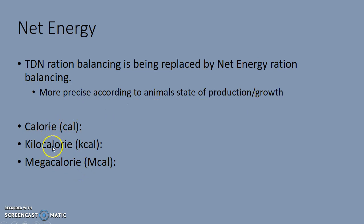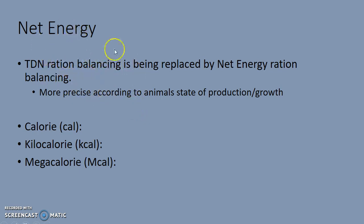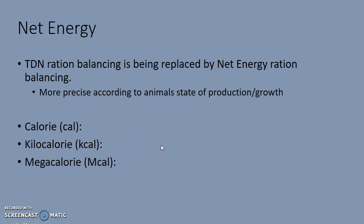A few more definitions — calorie, kilocalorie, and megacalorie. A calorie is the energy required to raise the temperature of one gram of water one degree Celsius. A kilocalorie raises one kilogram of water one degree Celsius. A megacalorie is 1,000 kilocalories, or one million calories. The main one I want you to know is the calorie: the energy required to raise one gram of water one degree Celsius.